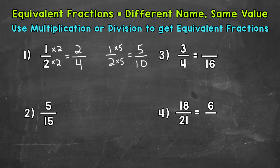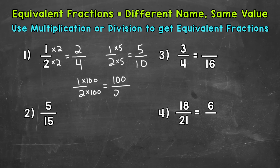Different names, same value. One more example: starting with 1 half, let's multiply both our numerator and denominator by 100. 1 times 100 is 100, and 2 times 100 is 200. So 100 two-hundredths is equivalent to 1 half.